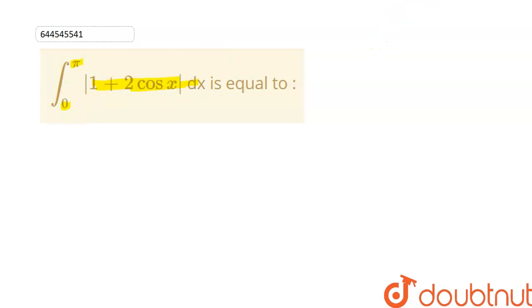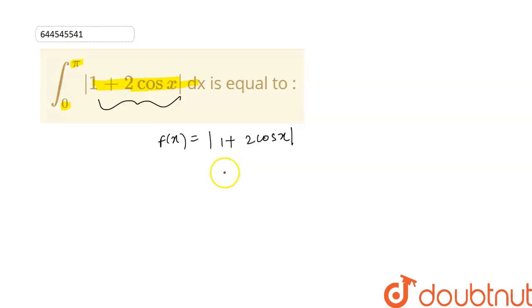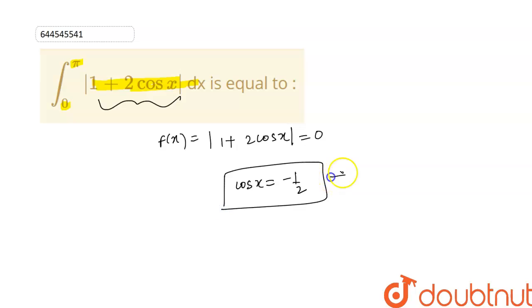So let's solve this. Our function f(x) is given as mod of 1 + 2cos x. Now let's set this equal to 0. Then we get the value of cos x as −1/2. And we know that when cos x = −1/2, then the value of x is 2π/3.